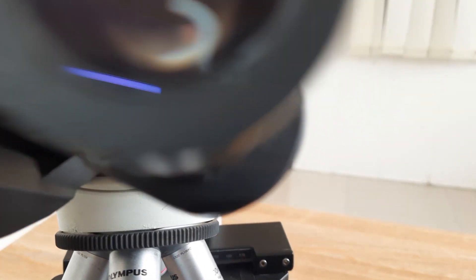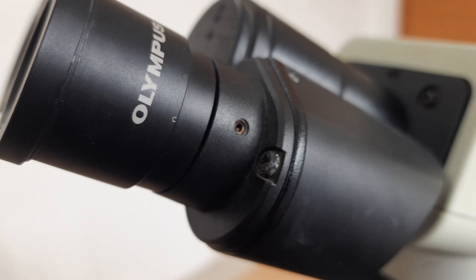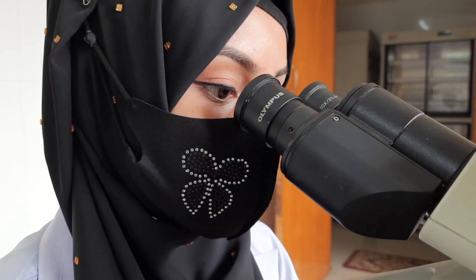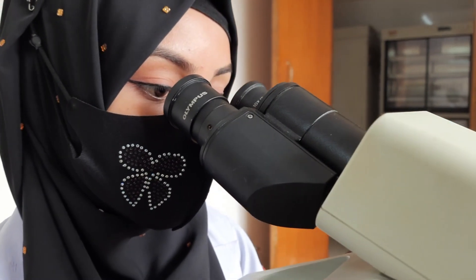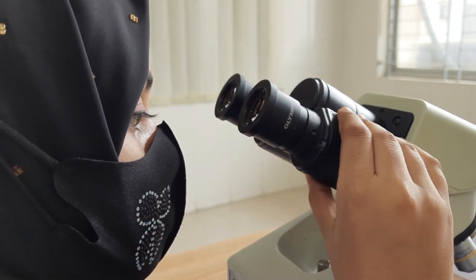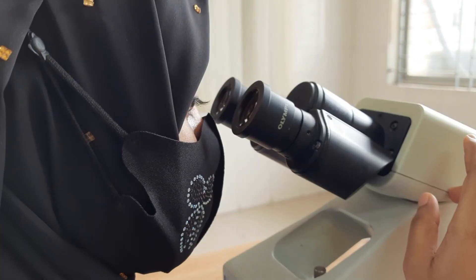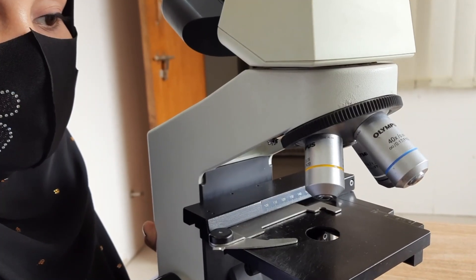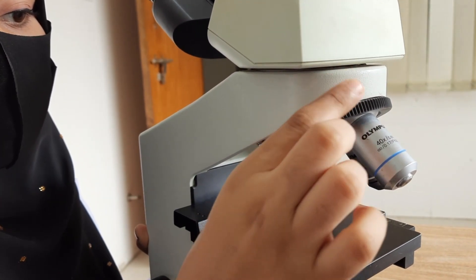The eyepiece is the lens you look through when using the microscope. It typically provides 10x magnification and is where you observe the specimen. This can be adjusted according to our eyes by rotating. The nose piece is a rotating component that holds the objective lenses.